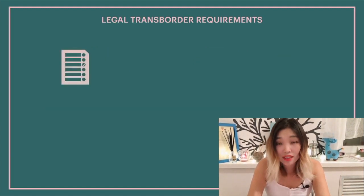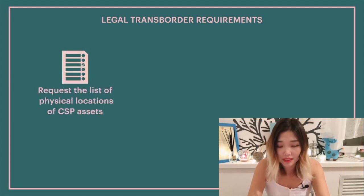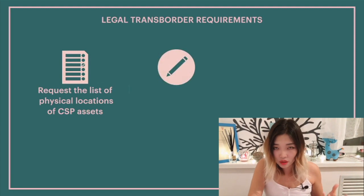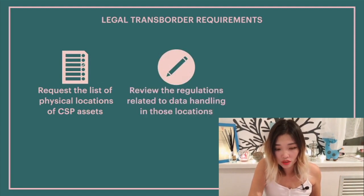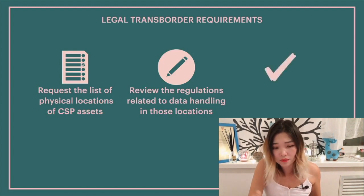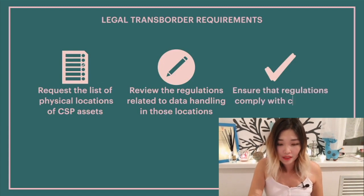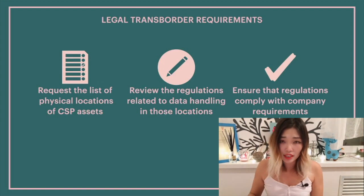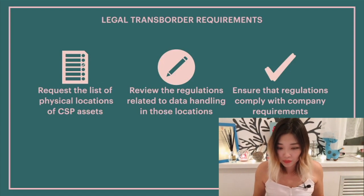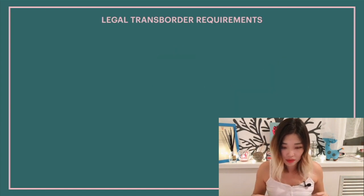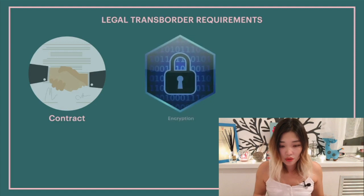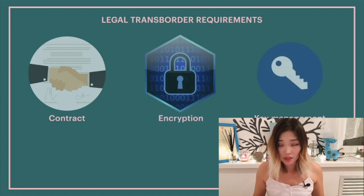In terms of controls, it is important to first request the list of physical locations of the CSP assets, then review the regulations in those locations to ensure compliance with organizational requirements regarding data privacy. It is also good practice to specify in the contract that the CSP would not move assets to locations where regulations are not aligned with company requirements. The company should also ensure that data transferred to the CSP are encrypted and a proper key management process is in place.